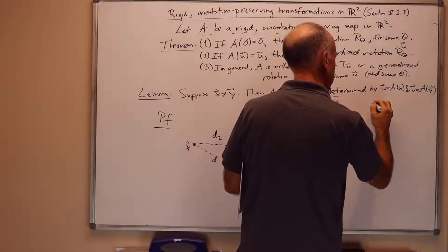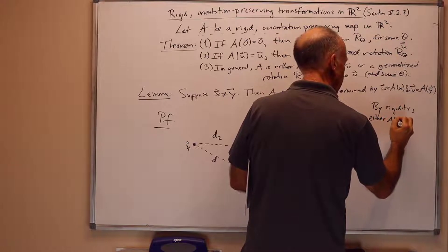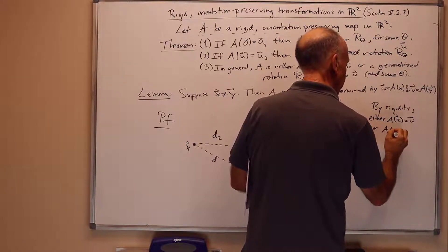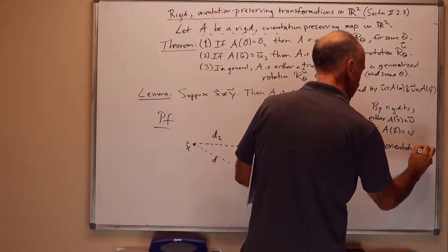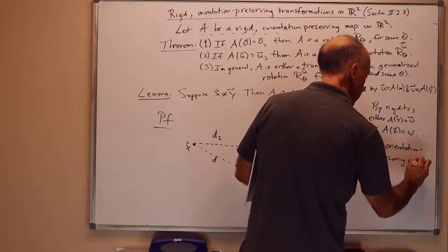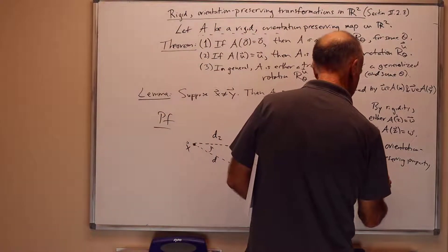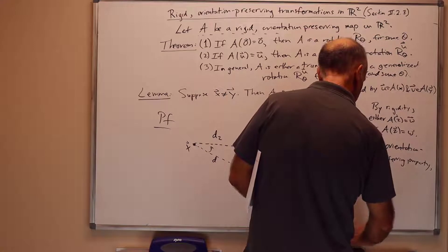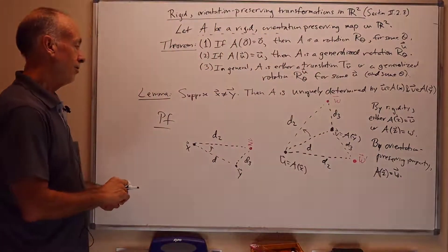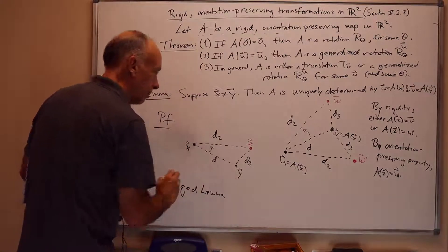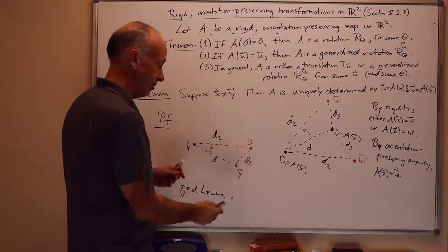By rigidity of A, either A of z equals w or A of z equals w prime. But by the orientation-preserving property, we have to have the angles preserved. We've got a counterclockwise angle here and a counterclockwise angle here, so it follows that A of z has to be equal to w. That proves the lemma, because the value of A of z is uniquely determined once you know u and v are the values of A on x and y.